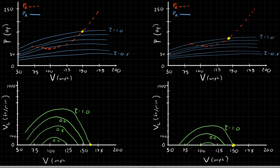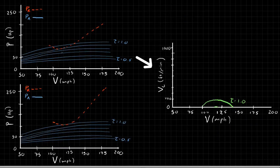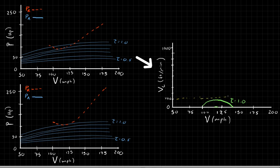Eventually, this keeps happening — the rate of climb plot continues to shrink until we get to a point like this. The plot shown here corresponds to the point at which the maximum climb rate we can get is 100 feet per minute.